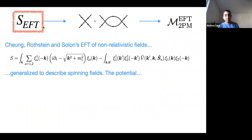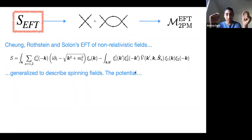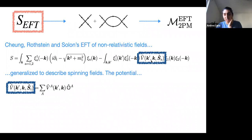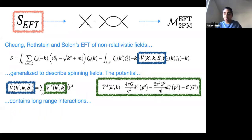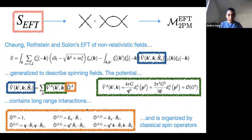On the other side, as mentioned, we start with this effective action that describes non-relativistic fields. In this case we want them to carry spin, so the potential that makes the fields interact is written as an expansion in powers of G to the relevant order — similar to the spinless case — to describe the long-range interaction, plus operators that carry the spin and respect the classical counting.